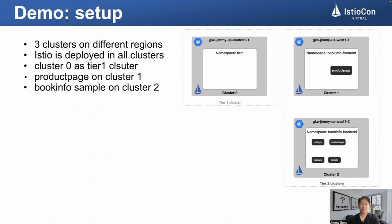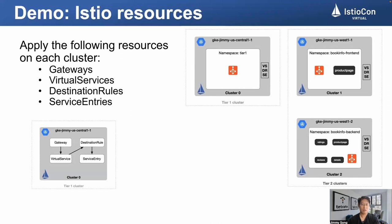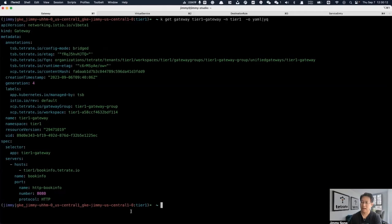Next, I will demonstrate how to achieve multi-cluster routing and load balancing. Only by solving the multi-cluster routing problem can we achieve more advanced functions such as load balancing and failover. Because the Tier 1 cluster also deployed Istio, you can apply the load balancing methods introduced earlier to this gateway. You need to create virtual services, destination rules, and service entries in each cluster. The service entries need to include the entry points of the ingress gateways of each cluster.